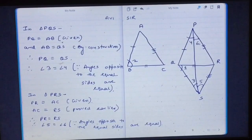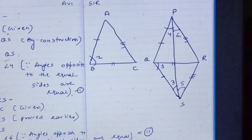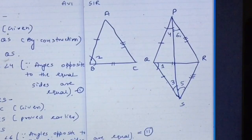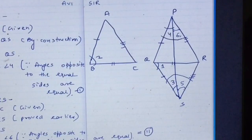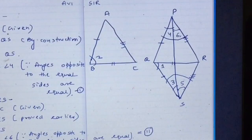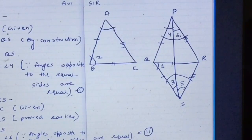Taking angle 3 equals angle 4 as equation 1, and angle 5 equals angle 6 as equation 2, if we add both equations we get angle 3 plus 5 equals angle 4 plus 6. Therefore, the entire angle S is equal to the entire angle P. We also know angle A equals angle S, proved earlier. Since angle A equals angle S and angle S equals angle P, therefore angle A equals angle P.